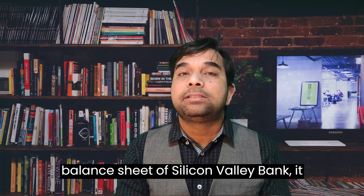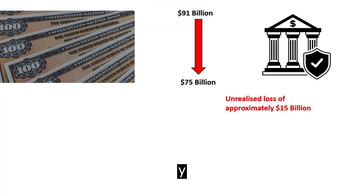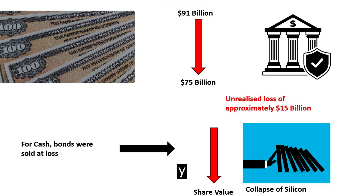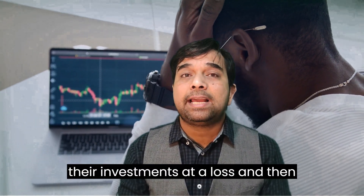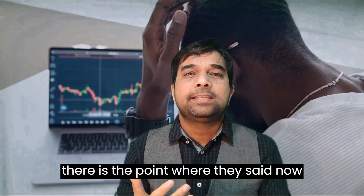Looking at the balance sheet of Silicon Valley Bank, it had $91 billion worth of bonds held till maturity, but their current value is $76 billion. This indicates an unrealized loss of $15 billion. Investors looked at the balance sheet and realized they were sitting on a ticking bomb and advised people to pull their money out. This created a bank run for Silicon Valley Bank, which was already going through operational issues. For arranging cash, they had to sell their investments at a loss, and then they reached a point where they said they cannot do it anymore. This collapsed the bank and its share value went down.